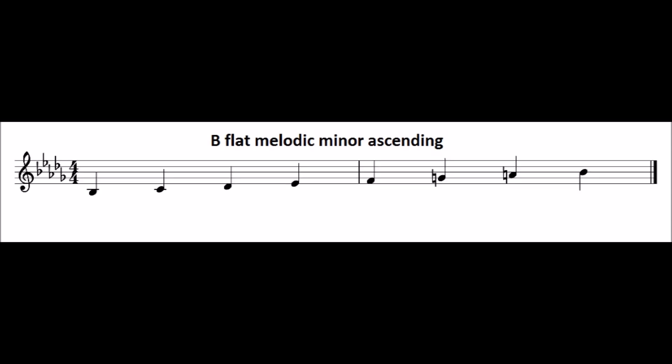B-flat melodic minor has a key signature of five flats: B-flat, E-flat, A-flat, D-flat and G-flat. And melodic minor scales ascending raise the sixth and seventh notes. So in this case, the G becomes natural, and the A becomes natural.